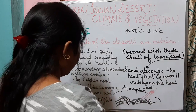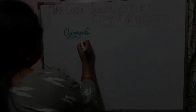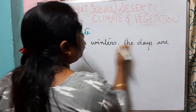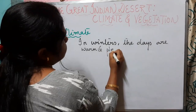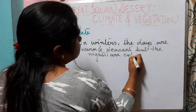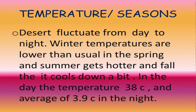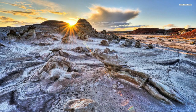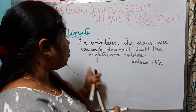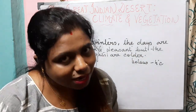In winters, the days are warm and pleasant but the nights are colder and it can be below minus 4 degrees Celsius. So in winters the days are warm and pleasant whereas the nights are very cold.